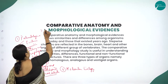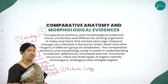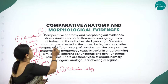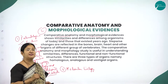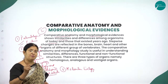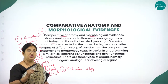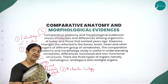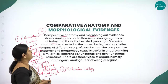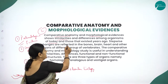Moving on to the second very important evidence: comparative anatomy and morphological evidence. The very word tells you — anatomy is the study of internal structure, morphology is the study of external features. Comparative anatomy and morphological evidence shows similarities and differences among organisms of today and those that existed years ago. The present day organisms have evolved from past animals through a very gradual, slow process.